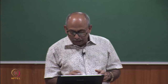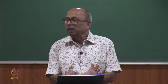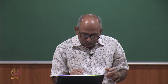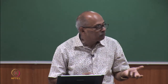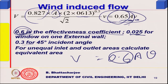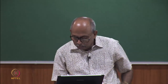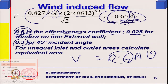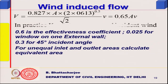For unequal inlet and outlet areas we can actually calculate the equivalent area — no empirical compromise there. However, this coefficient of effectiveness is somewhat empirical. The outside velocity at the window is not exactly the same as the free-stream outside velocity, which is why the coefficient is empirical, though its basis is clear.